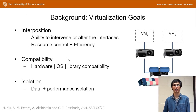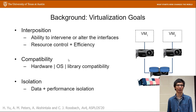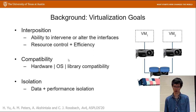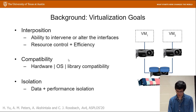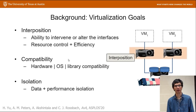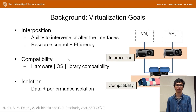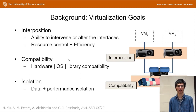Here are three properties that a well-designed virtualization system must have. First, it needs efficient interposition to virtualize software or hardware interfaces. Second, it should be compatible on different devices, operating systems, and framework libraries. And third, applications in different virtual machines shouldn't affect each other's safety or performance.